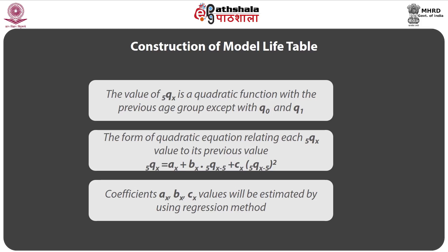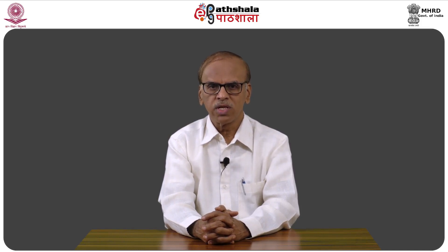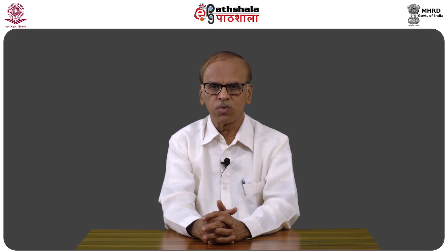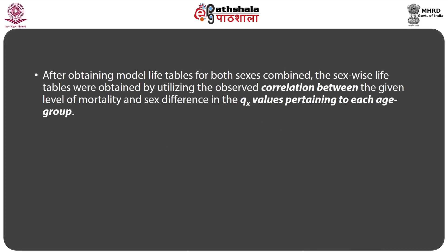The form of the quadratic equation relating each 5qx to its previous value 5qx−5 is: 5qx = ax + bx × (5qx−5) + cx × (5qx−5)². The coefficients ax, bx, and cx are estimated using a regression method. The 5qx values corresponding to any 5qx−5 can be computed through this second-degree chain relationship. After obtaining model life tables for both sexes combined, sex-wise life tables were obtained using the observed correlation between the level of mortality and sex differences in qx values for each age group.